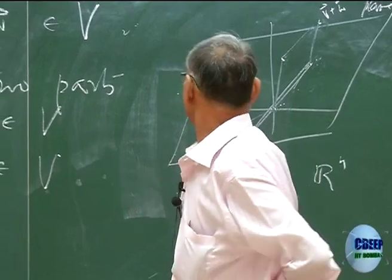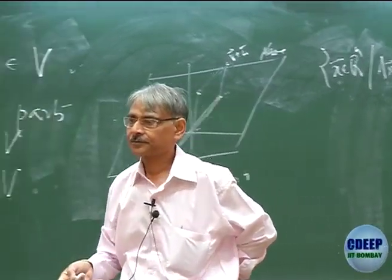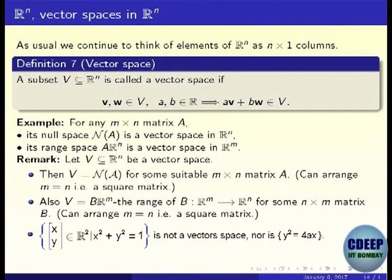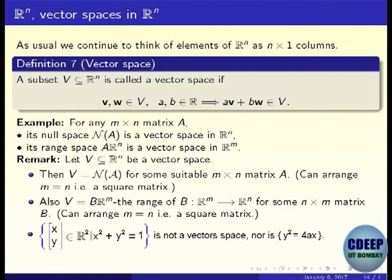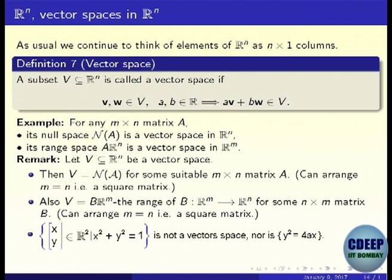Of course, the null space passes through the origin because A·0 = 0. Similarly, the range space of a matrix A is also a vector space. We study matrices as maps from Rn to Rm; the image set is again a vector space. Any vector space can be realized as a null space of some matrix, and any vector space can also be realized as a range space — these things we will be able to prove when we have done more linear algebra.